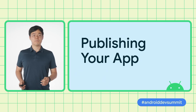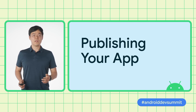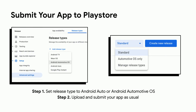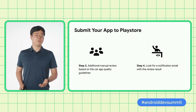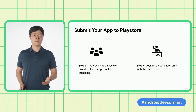This last section is about publishing your app. The process is very similar to the regular app publishing process, so we will only note the differences. To submit your car app in the Play Store console, click Setup, Advanced Settings, and Release Types. Select Android Auto or Android Automotive OS depending on your car app's build target. When uploading your APK, select Standard Release Type for Android Auto and Automotive OS Only for Automotive OS. After submission, there may be additional reviews based on car app quality guidelines. When the review is complete, you will receive a notification email with the result.